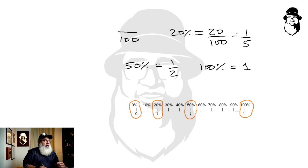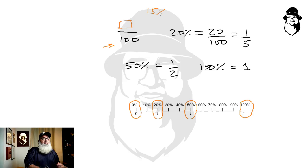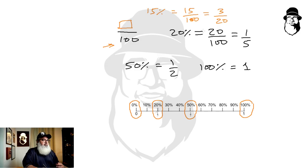We simply put the number in the numerator and put hundred in the denominator. If it cancels down, we cancel it to get the simplified form of the fraction. So let's say we have fifteen percent — we know it's fifteen over hundred, or fifteen hundredths, which cancels down to three twentieths.